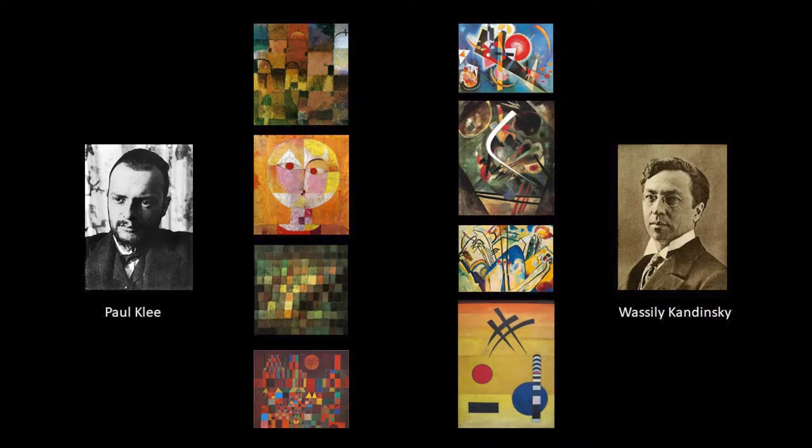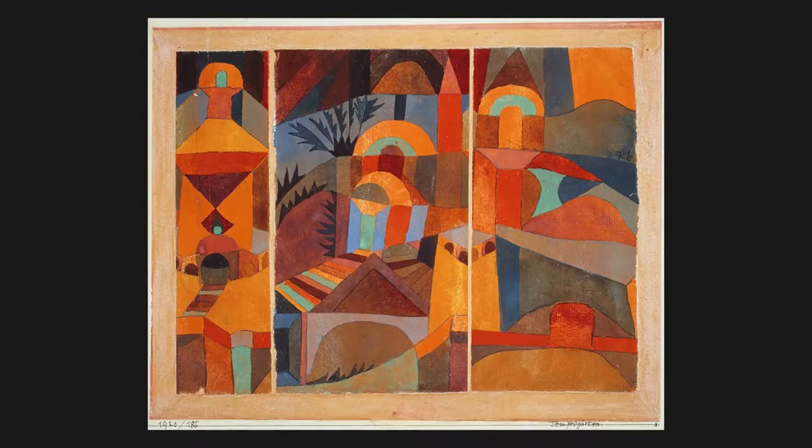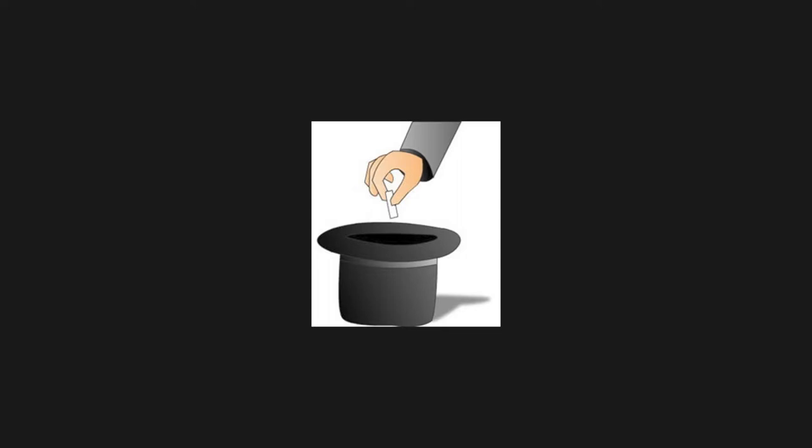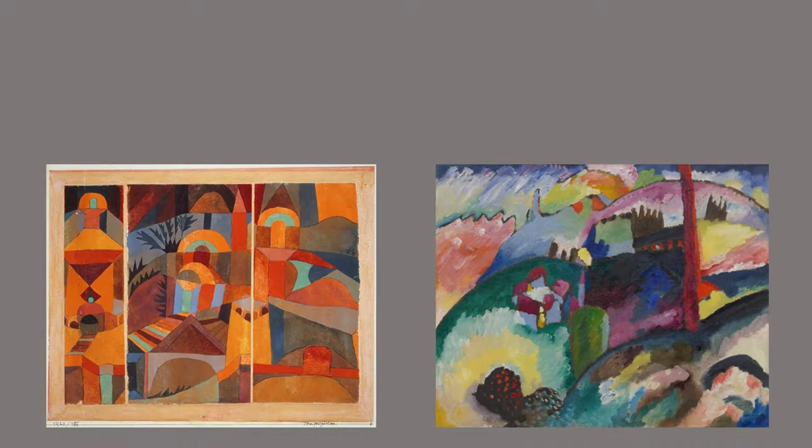The earliest study using the Minimal Group Paradigm was done in 1971. Forty-eight teenage boys were recruited to participate in what they believed to be a study of art appreciation. Each boy was shown a series of paintings in pairs and was asked to identify which painting he preferred. Once finished, the boys were told that one picture at each pair was painted by Paul Klee and the other by Vasily Kandinsky, two well-known European painters. The researchers had randomly assigned the boys into the two groups in a way that had nothing to do with the paintings.